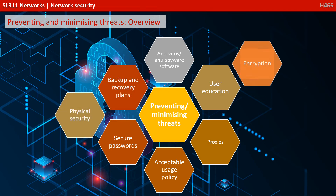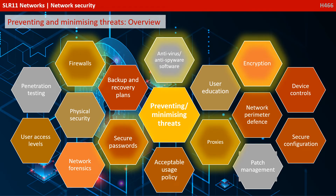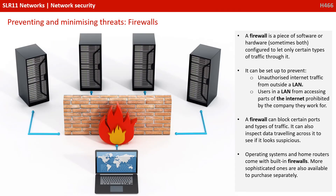Having gone through a series of threats, we also need to understand some of the measures we can put in place to help prevent and minimise these threats. A common one is a firewall — a piece of software or hardware, or sometimes both, configured to let only certain types of traffic through it. It can be set up to prevent unauthorised internet traffic from outside a LAN, and prevent users in a LAN from accessing prohibited parts of the internet. A firewall can block certain ports and types of traffic, and can also inspect data travelling across it to see if it looks suspicious. Operating systems and home routers typically come with built-in firewalls, and more sophisticated ones are available for purchase separately.